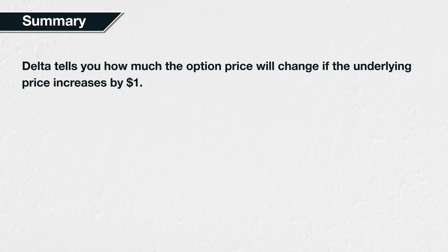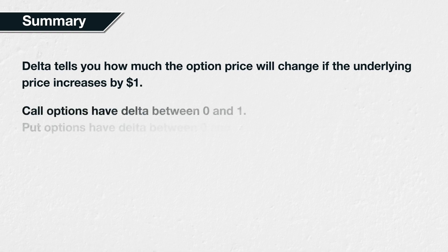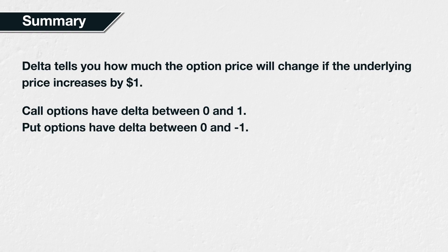In summary, an option's delta tells you how much the option price is expected to change if the underlying asset price increases by $1. Unlike futures contracts, an option's delta will normally not be 1, though it can be for deep in the money options. Call options have a positive delta between 0 and 1; put options have a negative delta between 0 and minus 1. This is because, all other things being equal, if the underlying price increases, call options will gain value and put options will lose value. Similarly, if the underlying price decreases, call options will lose value and put options will gain value. While an option's delta is a measure of the sensitivity of the option price to the underlying price movements, delta itself has sensitivity to various parameters. We will look at these in the rest of this section.